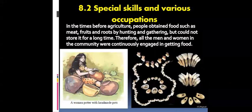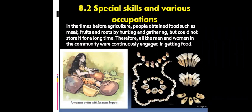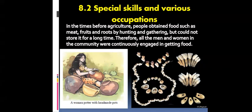Next is special skills and various occupations. In the times before agriculture, people obtained food such as meat, fruits, and roots by hunting and gathering, but were not able to store it for long. Therefore, all men and women in the community were continuously engaged in getting food. In the agricultural system, it became possible to store food grains for longer periods, so they had spare time available. There was more food available than needed, and some women and men began to experiment and develop new things using their natural creativity.